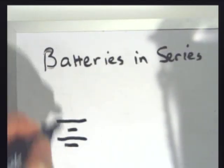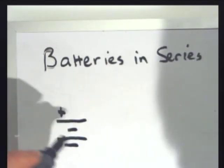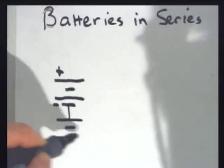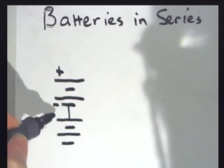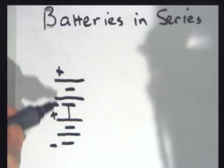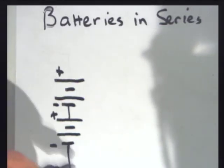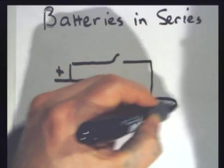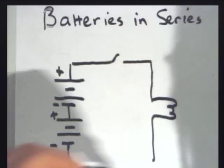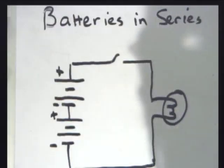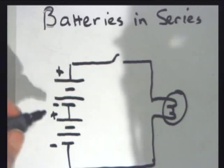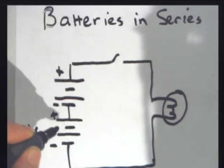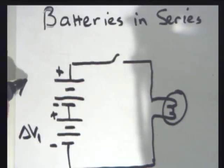So here's one battery. Now, I'm going to connect another battery in series. Anode, cathode, anode, cathode. I'll put a switch there and a light bulb. Now, each battery has got a potential drop. I'll call this delta V1. As it moves from one side to the other side, it drops a certain amount. I'll call this battery delta V2.